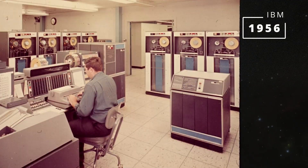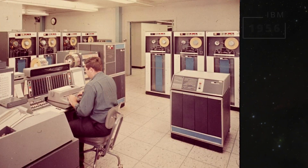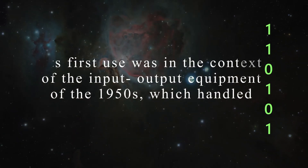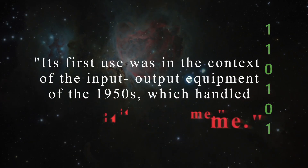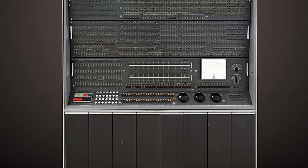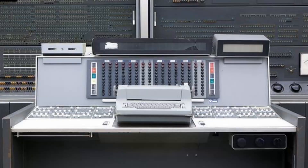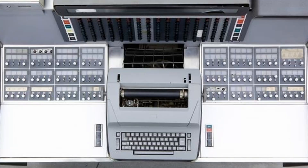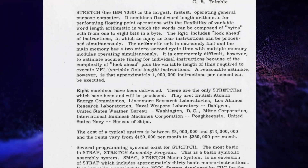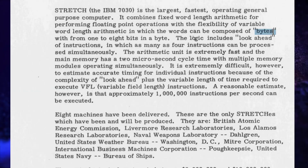The first time the word byte was ever used was in 1956, referring to a group of 6 bits from internal documents and early development stages of the IBM 7030 Stretch supercomputer, which was the world's fastest computer from 1961 to 1964. In this early computer, the technical documentation refers to any useful group of bits between 1 and 8 in size as a byte.